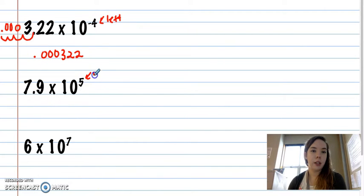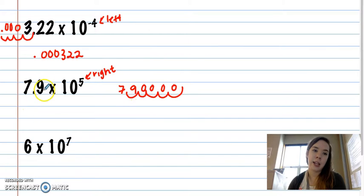Here, since this one is positive, we're moving to the right. So the 7.9 goes 1, 2, 3, 4, 5. That's only 4 0's. That 9 is the first one. So 790,000.